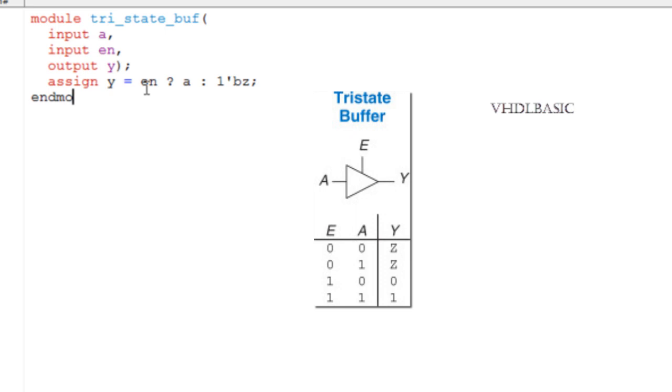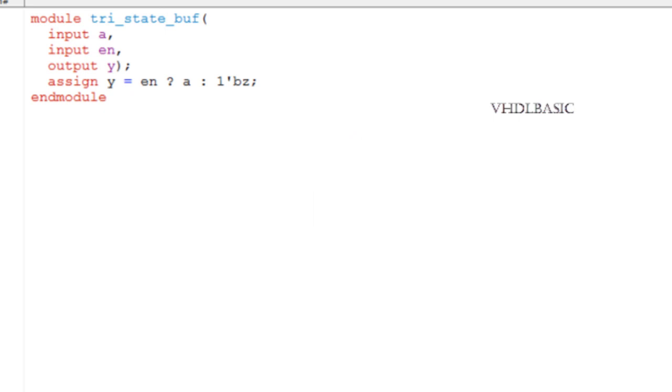Here you can see the syntax of the condition. Enable and the question mark, so if it is true we assign the value of A. To differentiate the else case we use colon. In the else case we are assigning high impedance to Y. Thanks for watching this video.